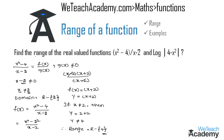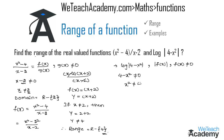Now consider the second example: log of the modulus of (4 - x²). This is in the form log|f(x)|, which is defined only when f(x) is not equal to zero. So 4 - x² ≠ 0, which means x² ≠ 4, and therefore x does not belong to {-2, +2}. The domain is all real numbers except -2 and +2.